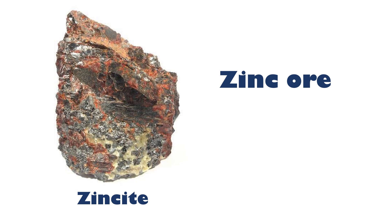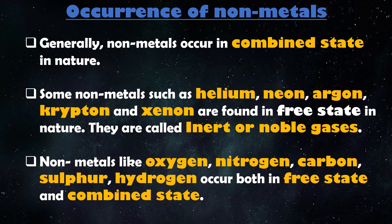Let us discuss the occurrence of nonmetals. Generally, nonmetals occur in combined state in nature. Some nonmetals such as helium, neon, argon, krypton, and xenon are found in free states in nature — they are called inert or noble gases. Nonmetals like oxygen, nitrogen, carbon, sulphur, and hydrogen occur both in free state as well as the combined state.